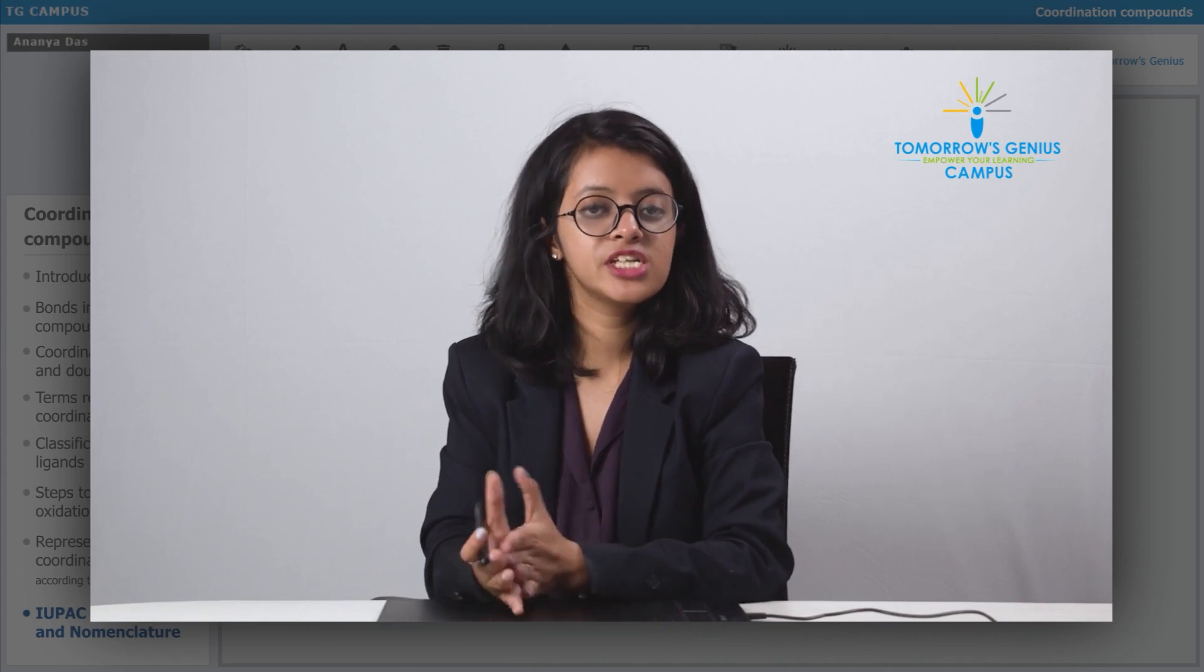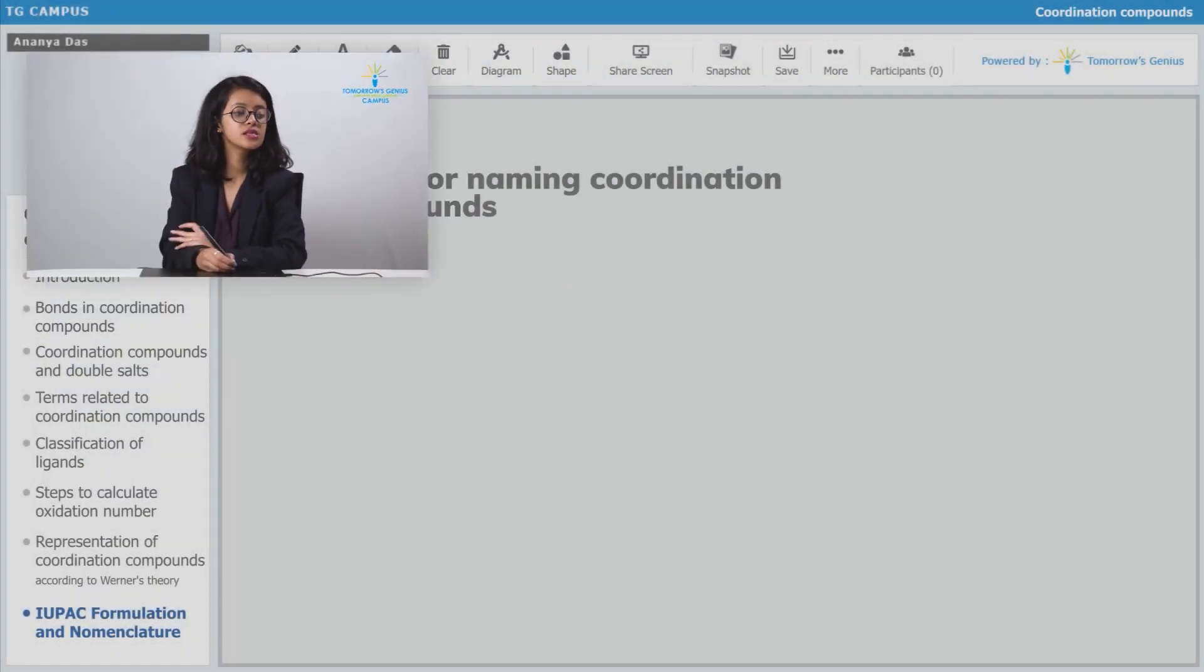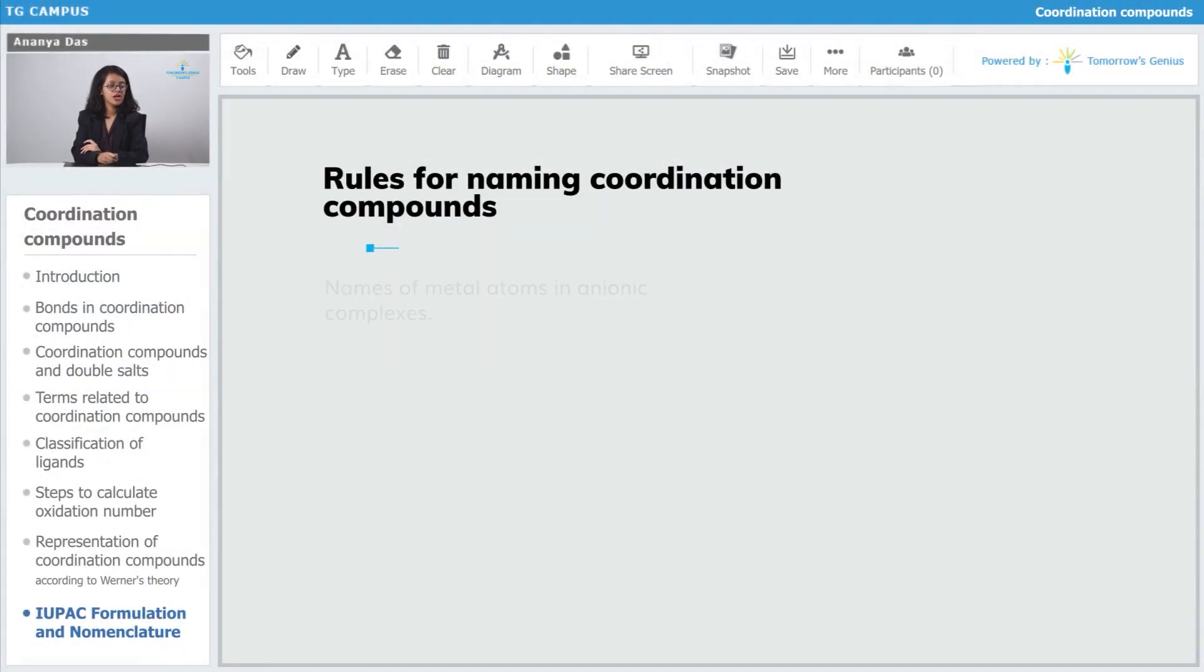Let us see how the name of the metal atom changes when in anionic complex. If we have aluminum in the anionic complex, aluminum's name will change to aluminate.